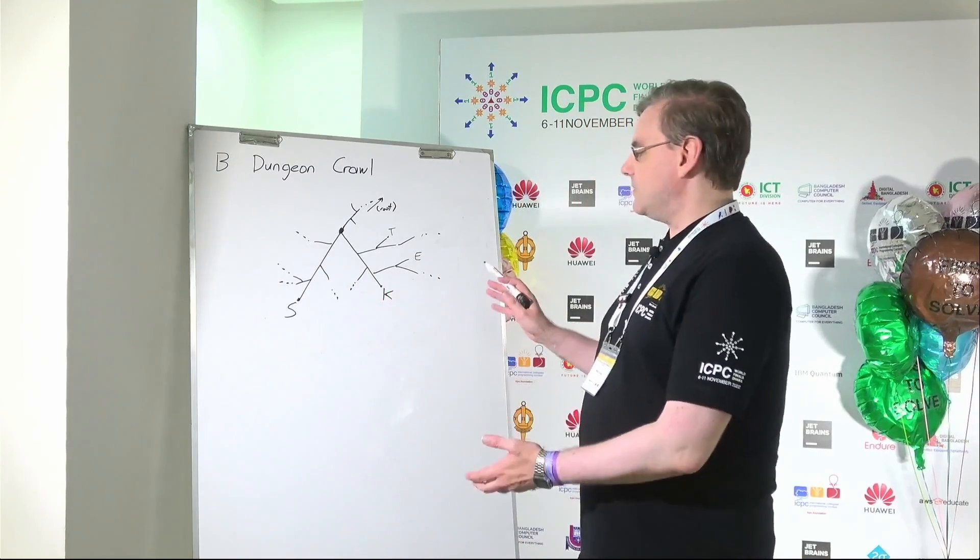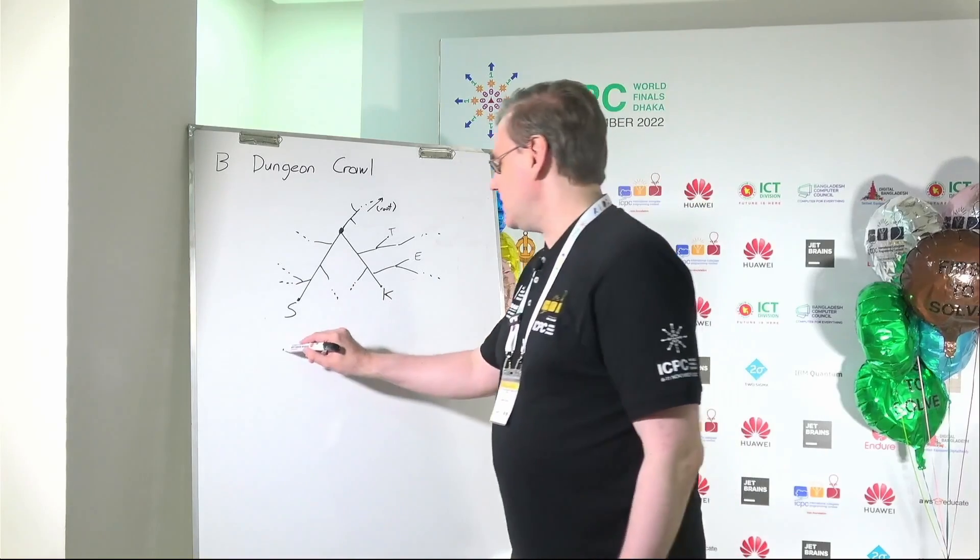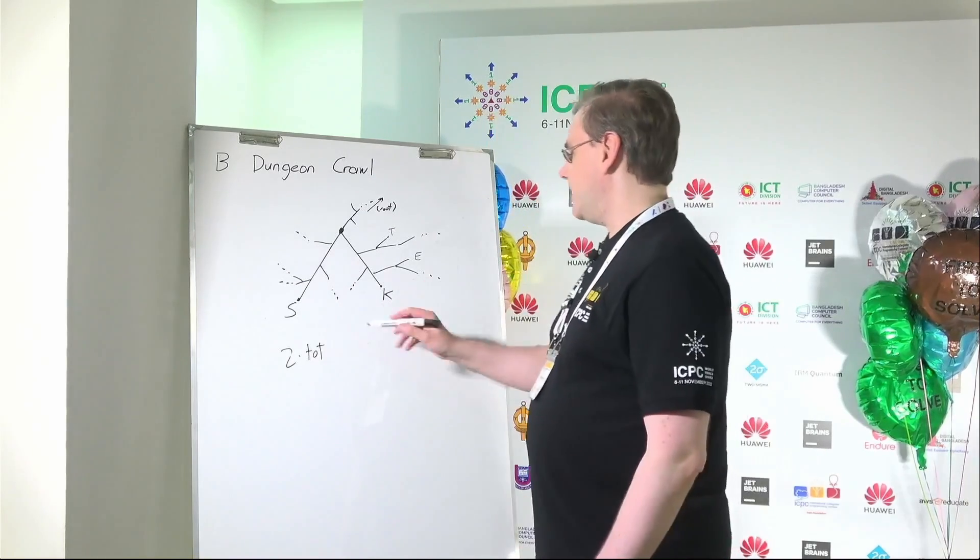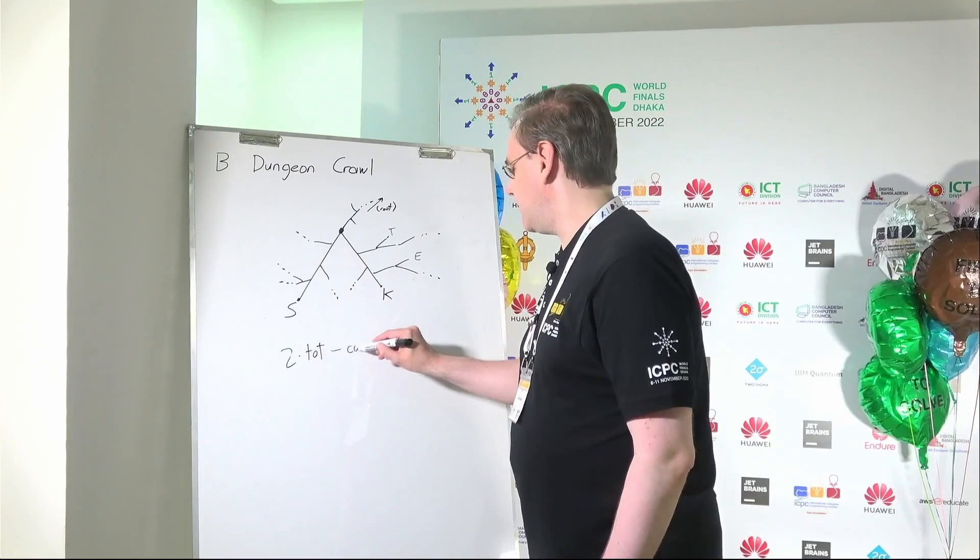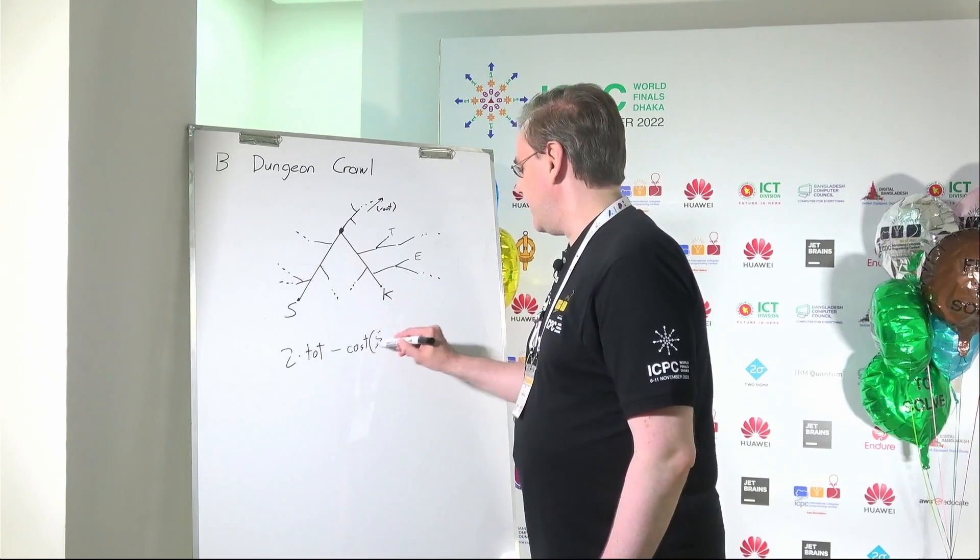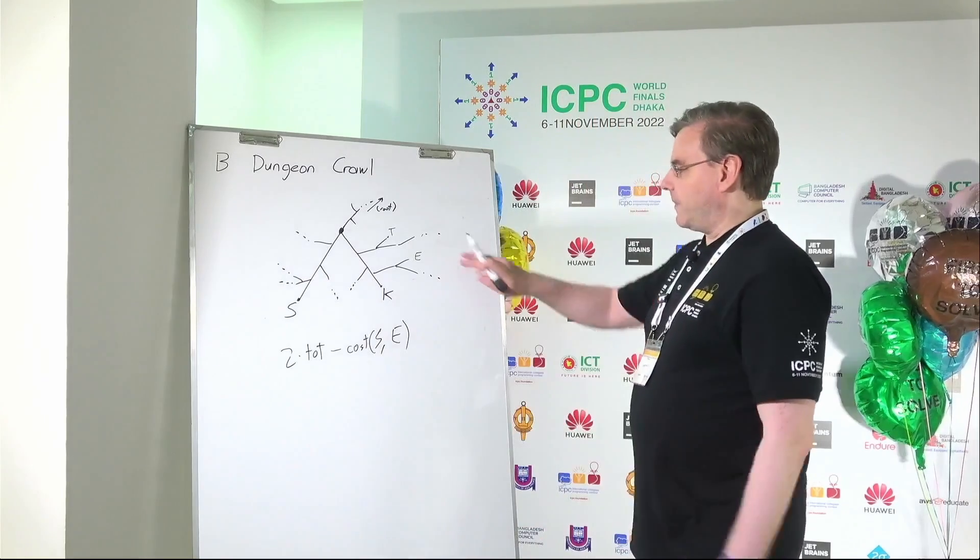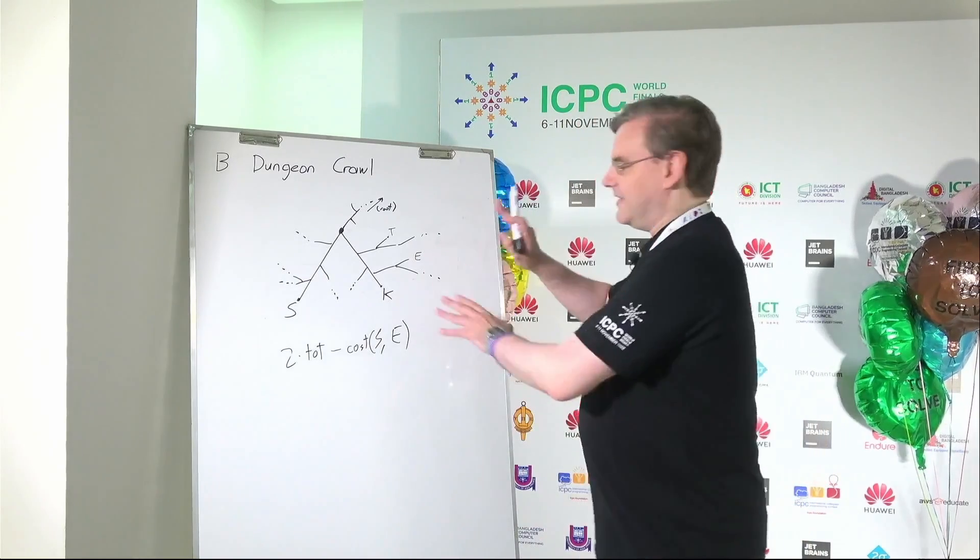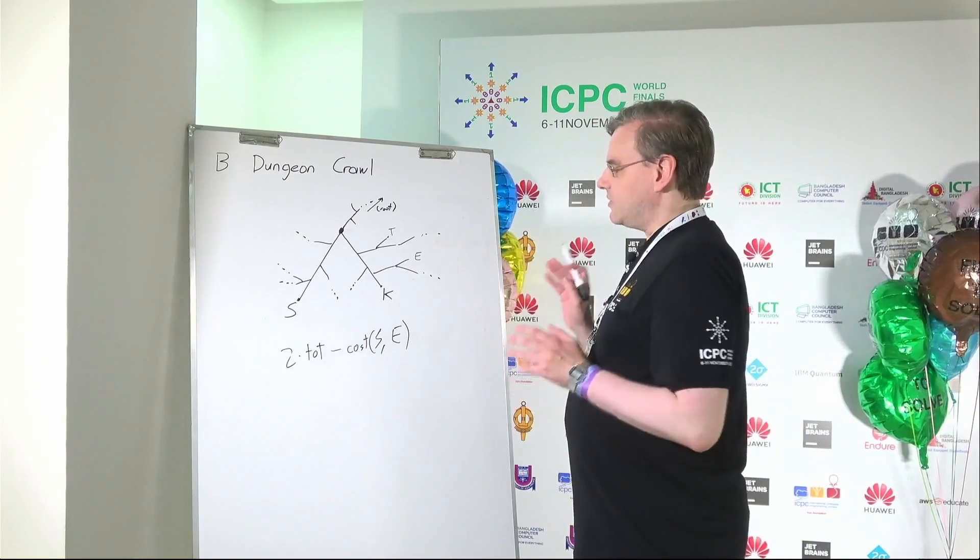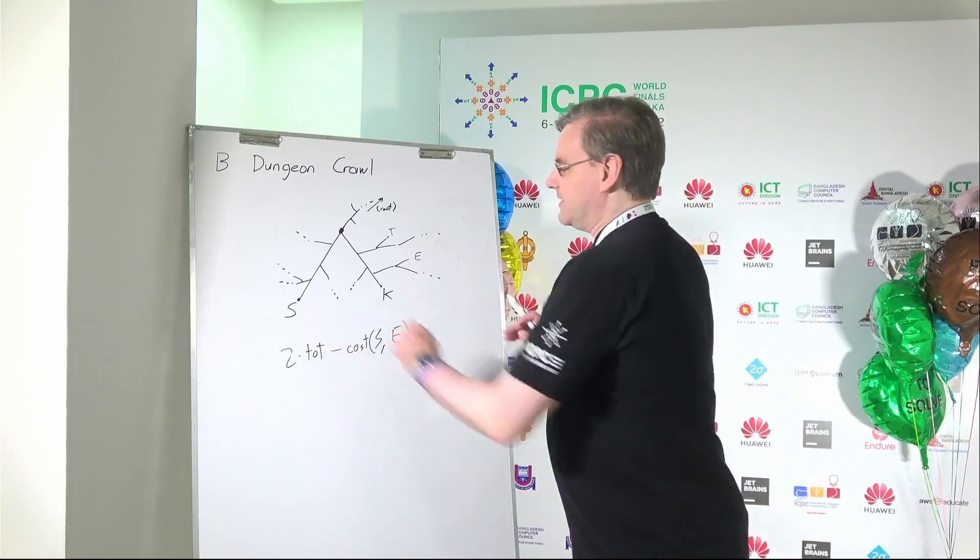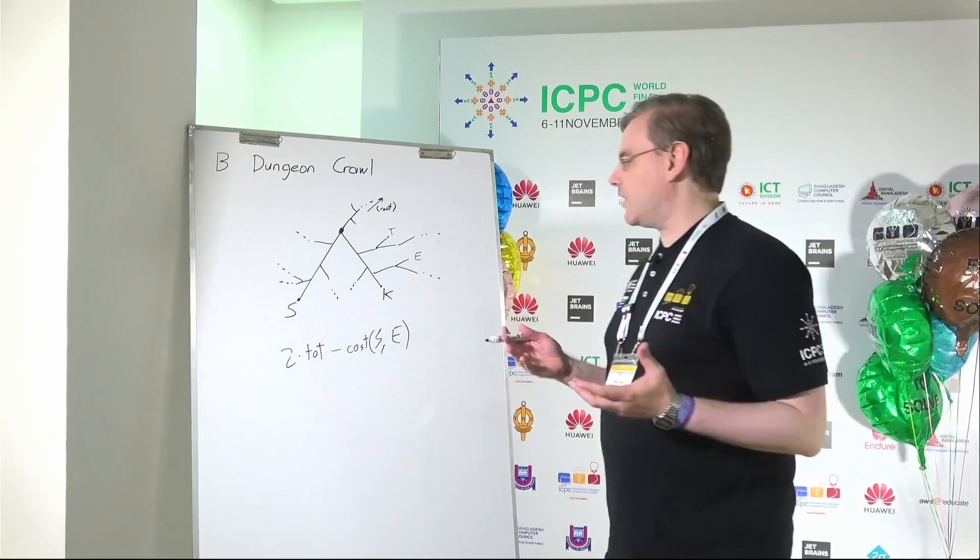So as it turns out, your answer is going to be two times the total cost of all the edges minus the cost of the path from S to E. So basically without considering the key or the trap, you just want to place E in the spot furthest from S. Now this wouldn't be too hard a problem to solve.